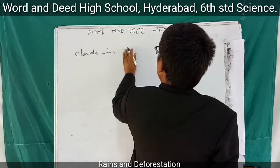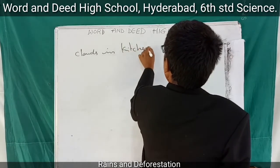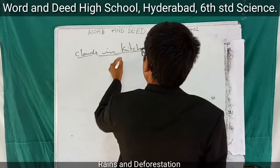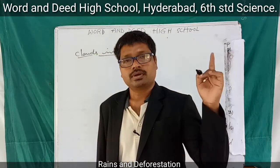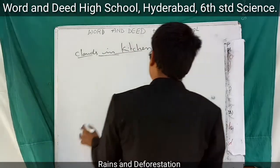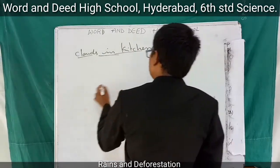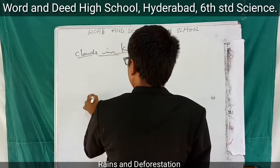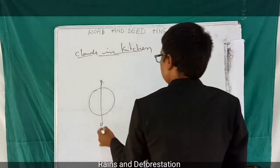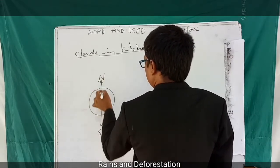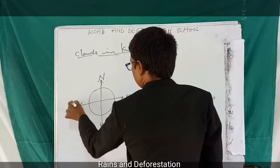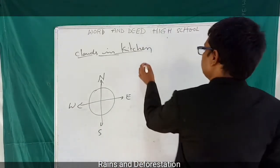In this video, what I would like to teach you is: so far we understood rain and where it comes from, but how does it come? Let us see now. Due to the movement of the Earth — you know the directions — this is south, this is north, this is east, and this is west.